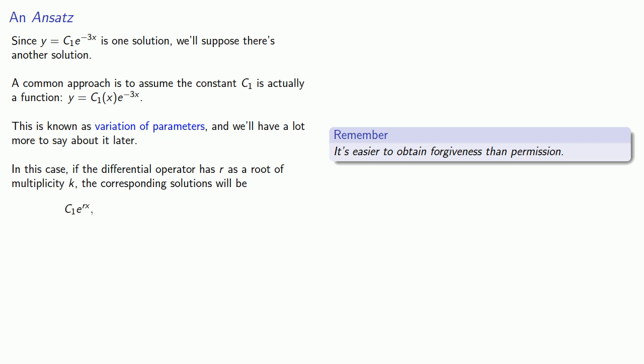To get the other solutions, we'll multiply by powers of x. So a second solution, C2 x e to power rx. A third solution, C3 x squared e to power rx, and so on, until we get enough solutions to account for the multiplicity of the root.